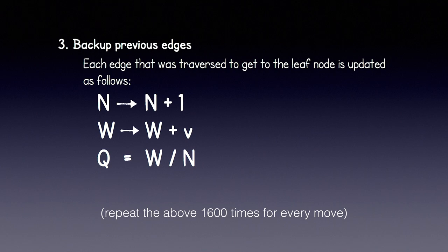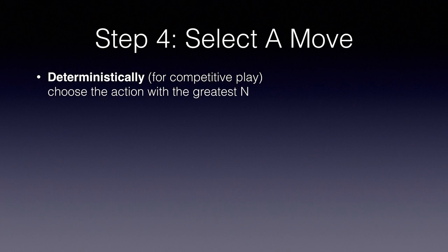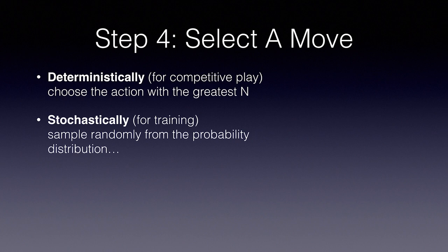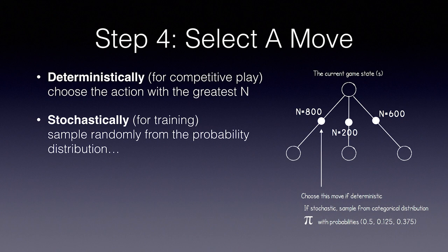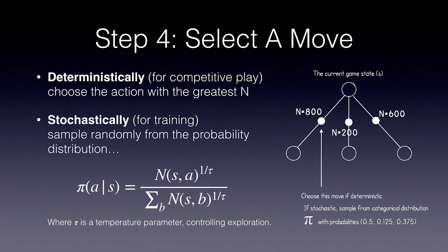For every single move in the game, we repeat the above 1600 times. Then it's time for Step 4, select a move. If we're playing in a competitive match or running the evaluation phase, we choose deterministically — simply choose the action from the current state with the greatest N. However, during training we want to add some intelligent randomness to encourage exploration. To make a stochastic move, we calculate the probabilities using a temperature equation. Tau is a temperature parameter that controls the level of exploration, initialized to 1 at the beginning of the game and an extremely small value after a fixed number of moves. We can also add Dirichlet noise to encourage further exploration — a Dirichlet distribution has the property that all its elements sum to 1, so we can average these into our Monte Carlo Tree Search probabilities and they will still all sum to 1.